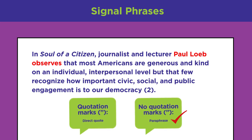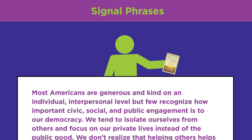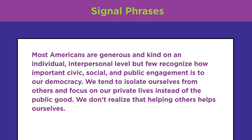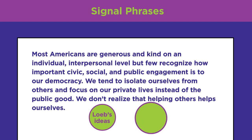Now meet Omar. Omar wants to use some of Loeb's ideas in his research paper about the changing roles of Americans in democracy, but he'll need to signal to the reader when an idea belongs to himself versus when it belongs to Loeb. This is Omar's first draft: 'Most Americans are generous and kind on an individual, interpersonal level, but few recognize how important civic, social, and public engagement is to our democracy. We tend to isolate ourselves and focus on our private lives instead of the public good.' Can you tell which ideas are Loeb's and which are Omar's?